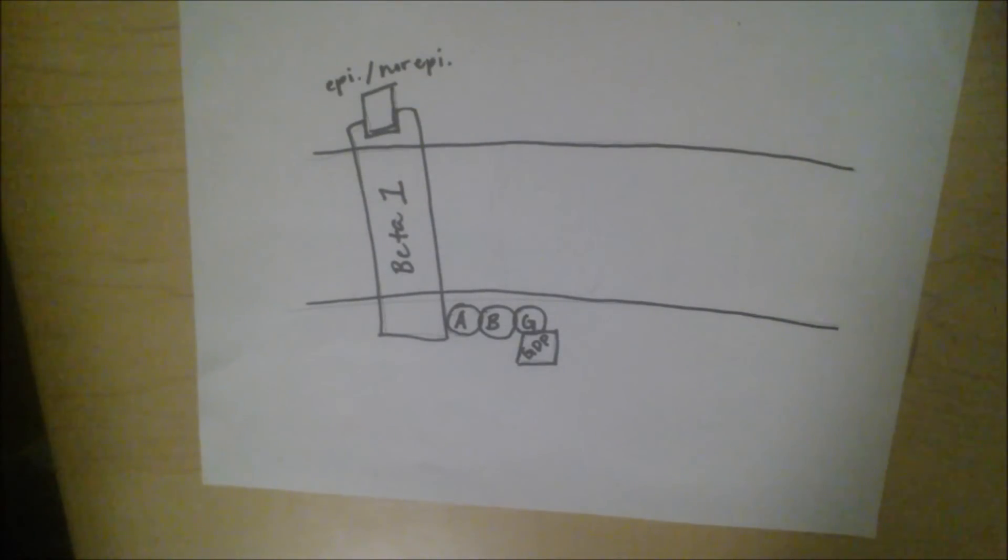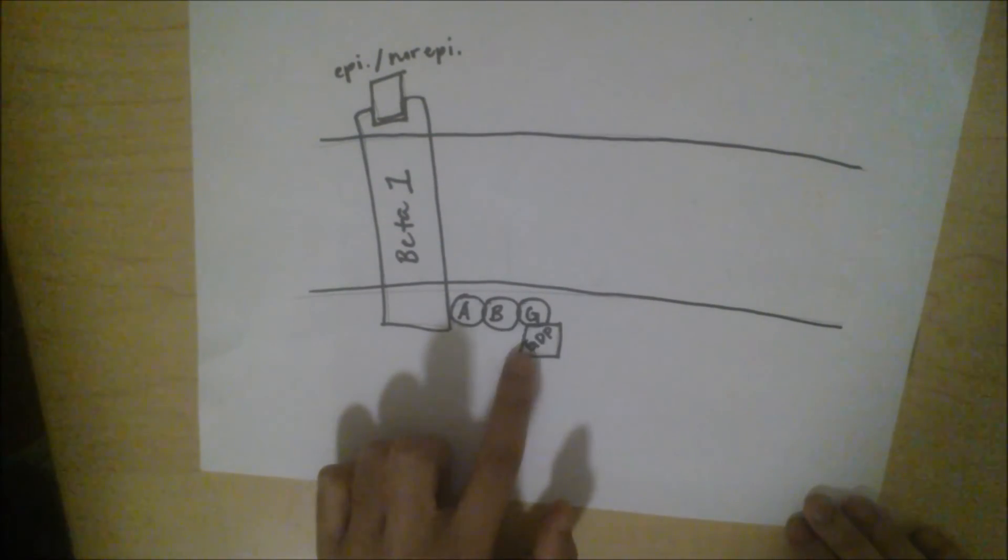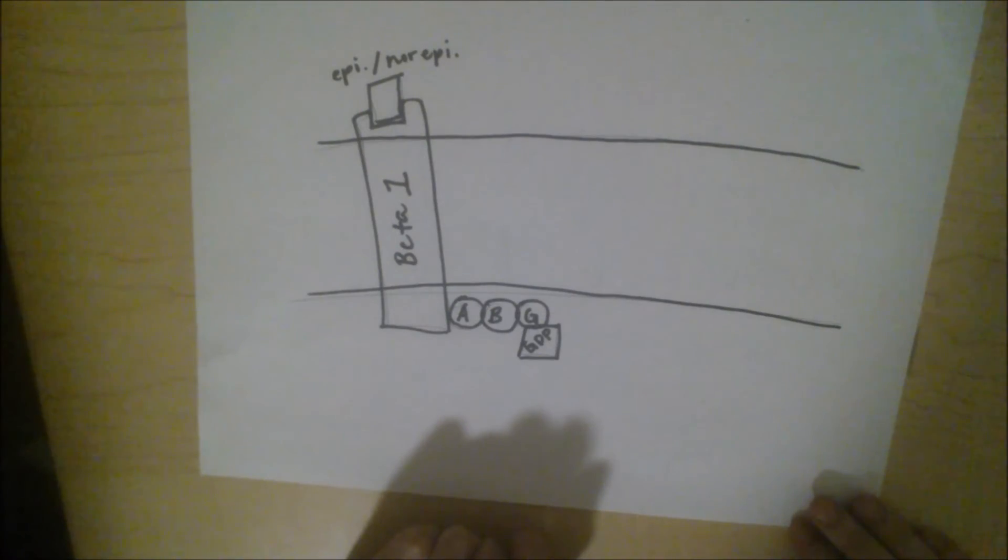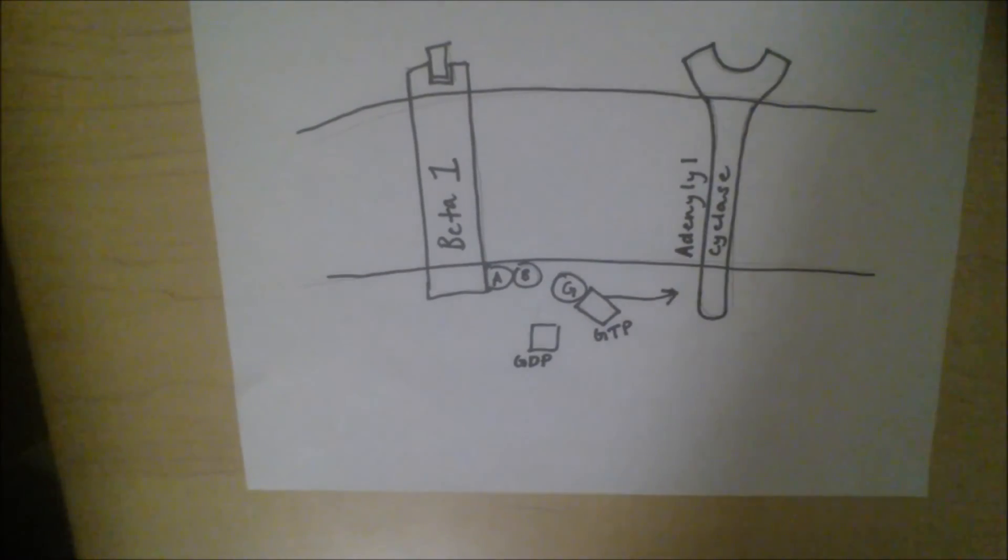The bonding of the norepinephrine or epinephrine activates the heterotrimeric G protein. Tri meaning three, the G protein has three subunits called alpha, beta, and gamma. One of these subunits is carrying guanosine diphosphate, or GDP. When the G protein is activated by the beta-1 receptor, the subunit breaks off and GDP is replaced by GTP, guanosine triphosphate.